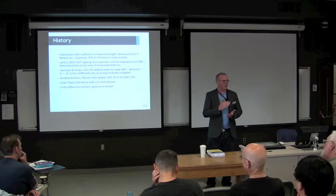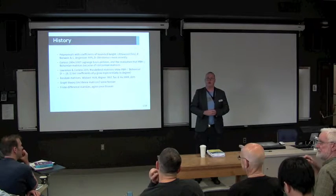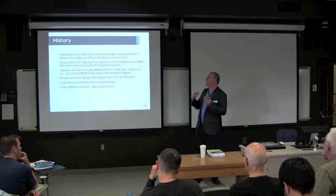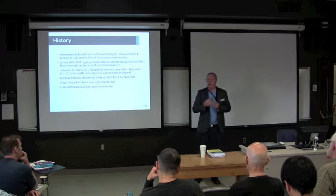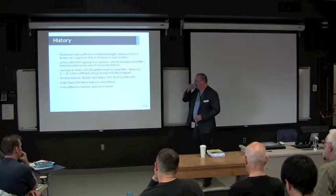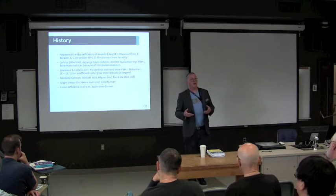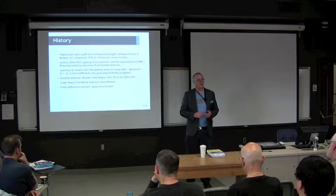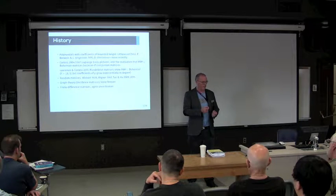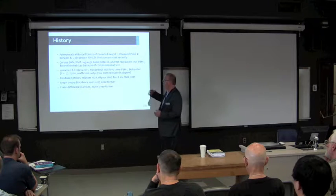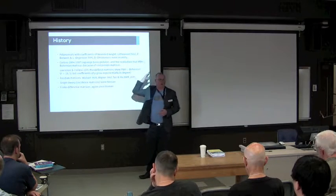Peter and Christopher Pitter published a paper shortly after that. Dan Christensen is here — Dan has on his website a whole bunch of interesting images related to this. So there are zeros of polynomials where the coefficients are bounded. The original problem had coefficients just plus or minus one. It generalizes in an interesting way. In about 2004 to 2007, I started working on polynomials expressed in Lagrange basis and found a way to find zeros directly without converting to a monomial basis.